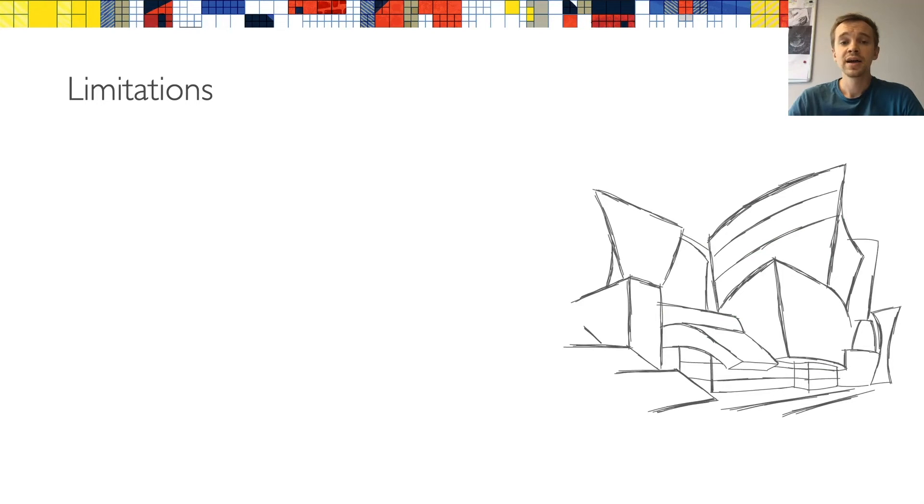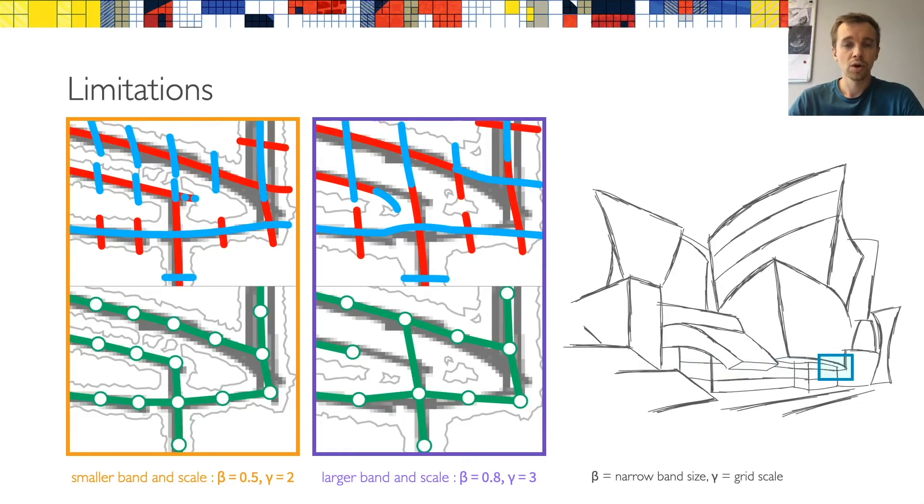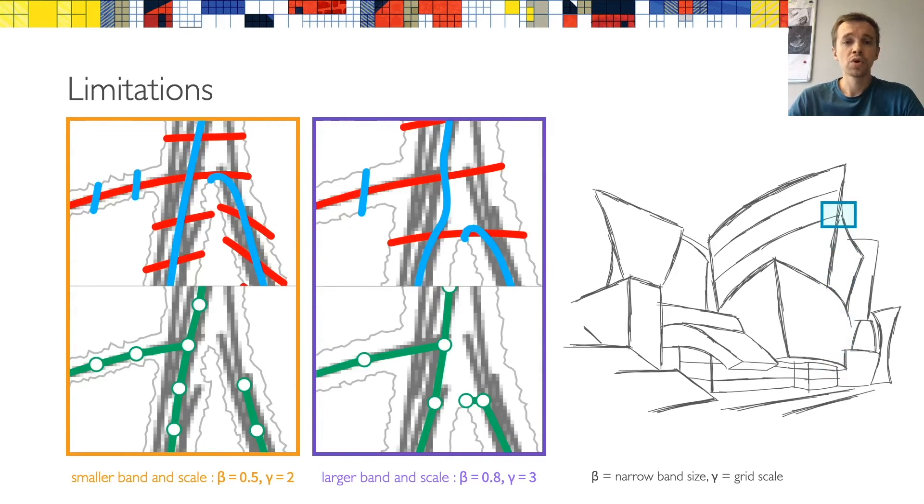Our method naturally has its limitations. Since the size of the narrow band is controlled by a global parameter, it might be difficult to find the size that works for the whole drawing. So, for instance, if you look at this junction for two different parameter presets, one preset with a smaller band and finer scale, and one with larger band and coarser scale. And you can see that in this case, the topological graph has a missing edge for a smaller band. On the other hand, this part of the drawing has multiple nearby strokes, and smaller band and scale are more suitable. Moreover, even with the adaptive field regularizer, very sharp junctions might be difficult to capture, no matter the chosen parameters.